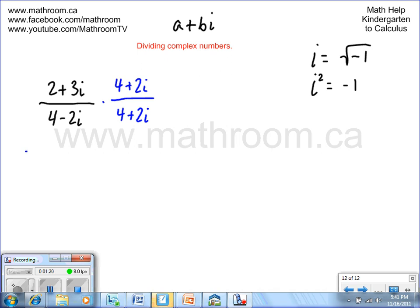So what we're going to do is we're going to have 2 plus 3i multiplied by 4 plus 2i in the numerator, and 4 minus 2i multiplied by 4 plus 2i in the denominator.